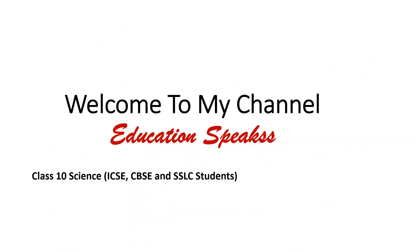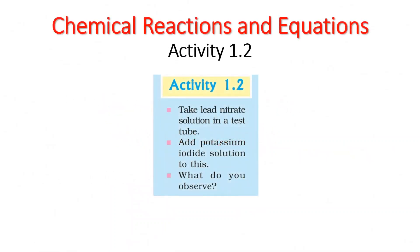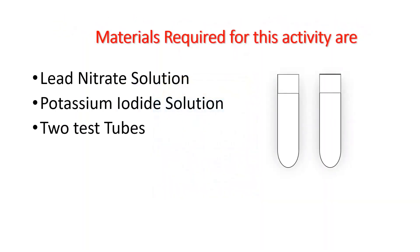Welcome to my channel Education Speaks. Today we are going to understand activity 1.2, chapter Chemical Reactions and Equations. In this experiment there will be a chemical reaction between two compounds: lead nitrate solution and potassium iodide solution. For this activity we need lead nitrate solution, potassium iodide solution, and two test tubes.